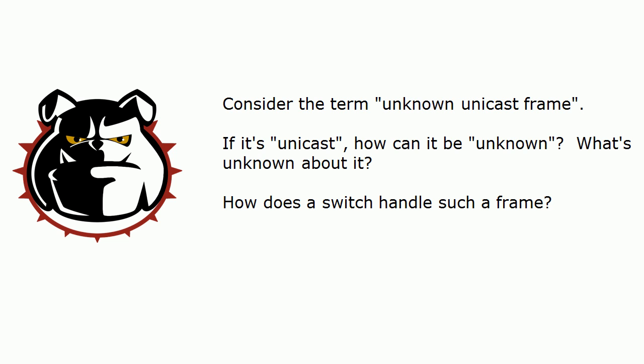There's a term that really threw me the first time I heard it when I started studying for my CCNA: unknown unicast frame. My first thought was, well, if it's unicast how can it be unknown? What's unknown about it? Well, that's what I'm asking you today. How can a frame be unknown if it's a unicast? And how does a switch handle such a frame? It could be filtered, forwarded out one port, or flooded — which action would it take?